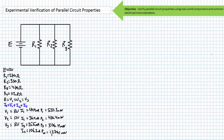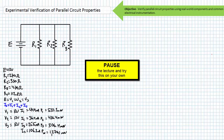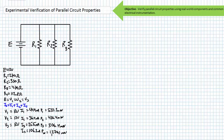Now, well-armed with expectations, we're ready to begin the lab. Pause the lecture and see if you can determine the four-band color code for the three resistors we require, assuming plus or minus 5% tolerance. A 270-ohm resistor is red, purple, brown, gold. A 330-ohm resistor is orange, orange, brown, gold. A 470-ohm resistor is yellow, purple, brown, gold. Go fetch.